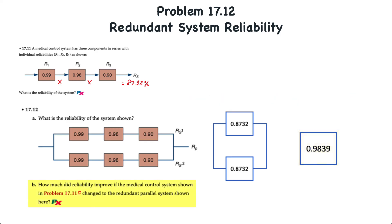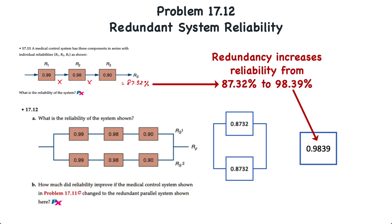For requirement B, in comparison to problem 17.11, this redundant system increased reliability from 87.32% to 98.39%, which is about a 10% increase in reliability. And that's quite substantial. And so, that's how you determine the reliability of redundant parallel systems.